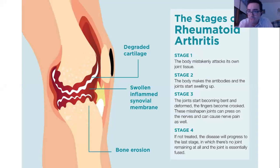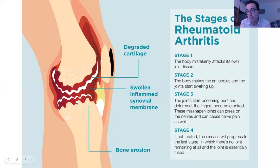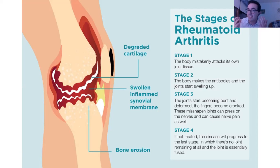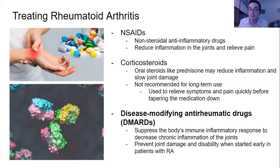Looking at the stages of rheumatoid arthritis: in stage one, the body mistakenly attacks its own tissue. The immune system causes a whole bunch of inflammation — the body starts making antibodies and the joint starts swelling up. Over a long period of time, the joint becomes bent and deformed, fingers become crooked, and these misshapen joints can press on nerves causing nerve pain. If not treated, it can progress until there's no joint remaining and it's essentially fused, making it a potentially very debilitating disorder.